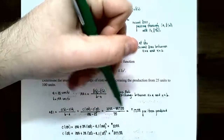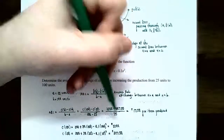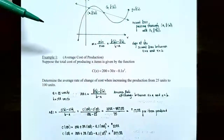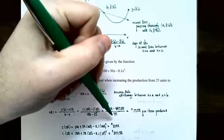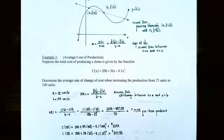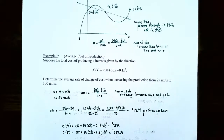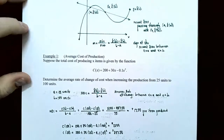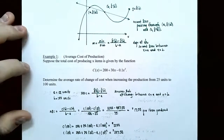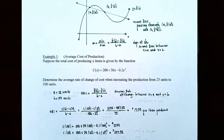The numerator is in dollars and the denominator is items produced, so the units are dollars per item produced. It's very important to state units for average rate of change to give context for what the answer means. Looking at this in terms of the graph, we found the slope of the secant line connecting the two points on the cost function curve.